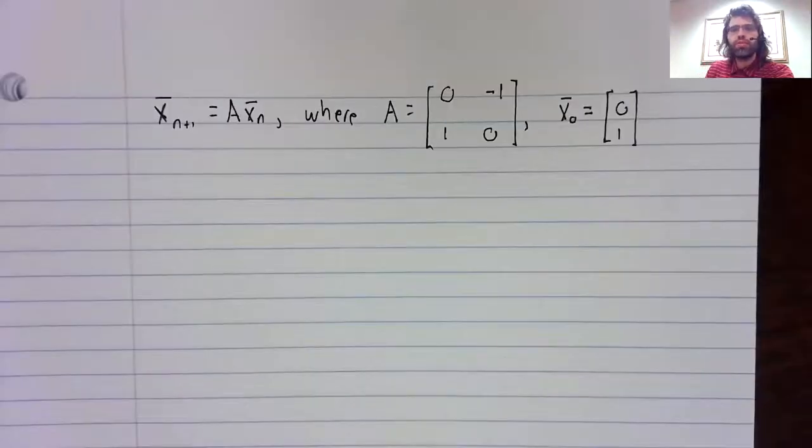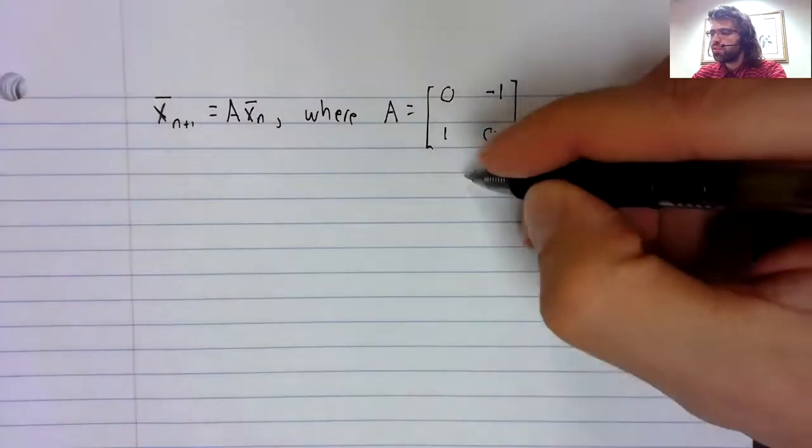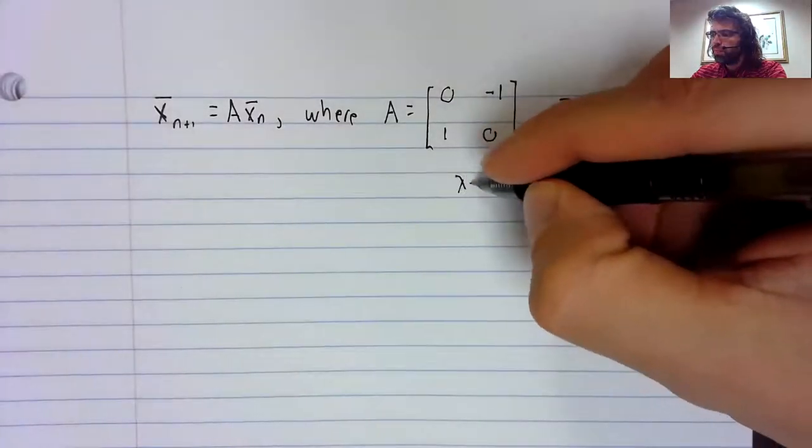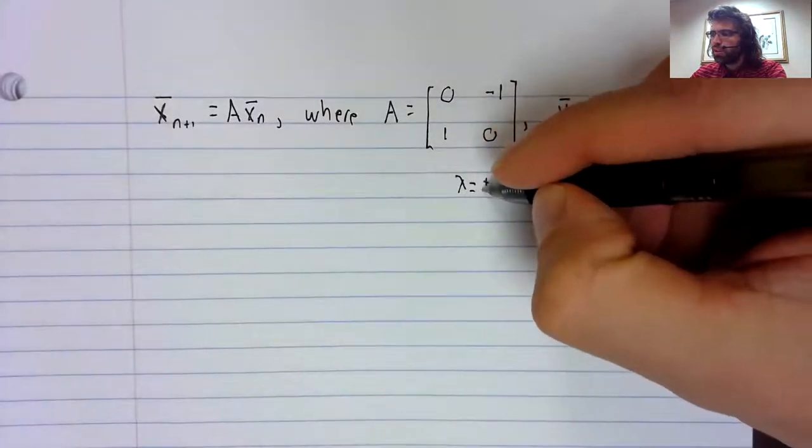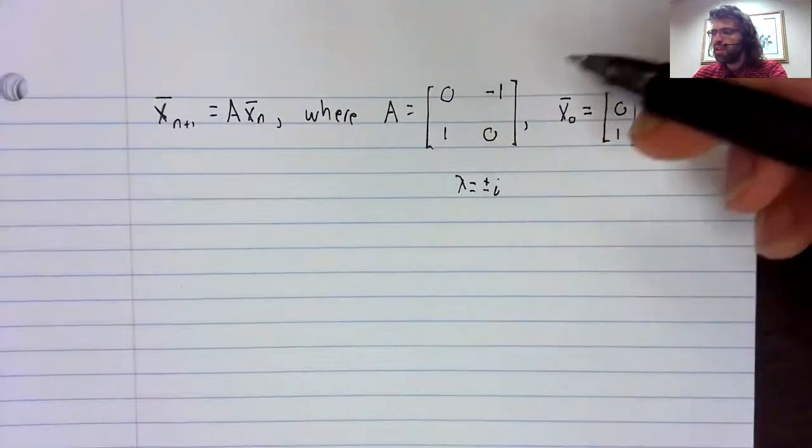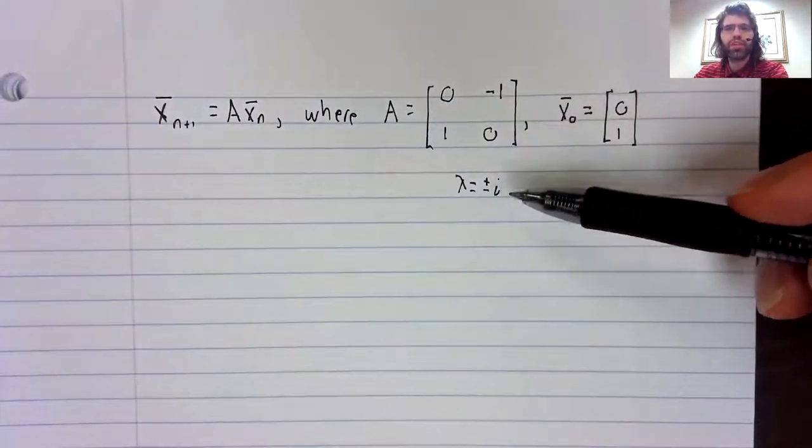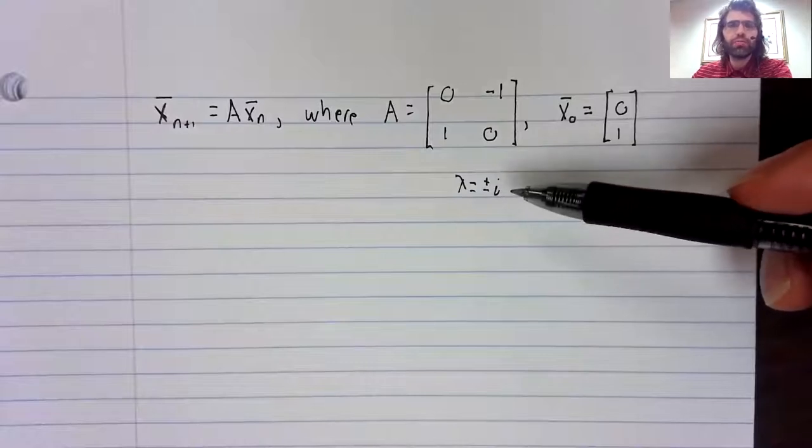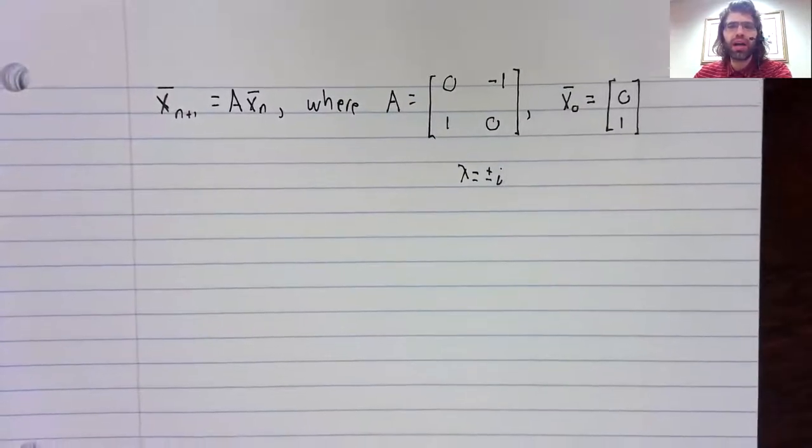So here's a discrete dynamical system. This matrix A has purely imaginary eigenvalues, plus or minus i.